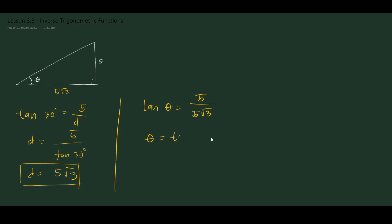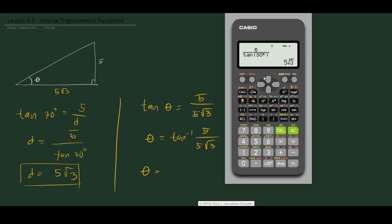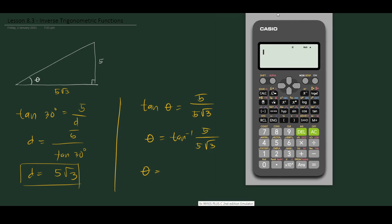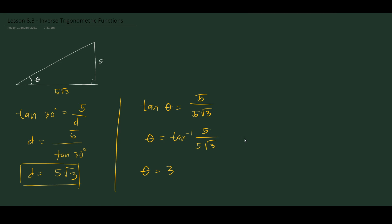So we apply arc tangent — tangent inverse of 5 over 5 square root of 3 equals theta. On the calculator, press shift, then tangent, then enter 5 divided by 5 square root of 3. We get 30 degrees. That is the use of inverse trigonometric functions.